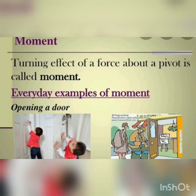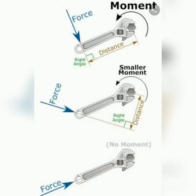Examples for couple are opening and closing of water bottle and rotating the steering wheel. Now, we will see the turning effects produced by moment and couple. The turning effect produced by a moment is called moment of force or torque. The turning effect produced by couple is called moment of couple. In both cases, the result is rotation. But if the rotating effect is produced by a single force, it is known as moment of force; if produced by a couple of forces, it is known as moment of couple.